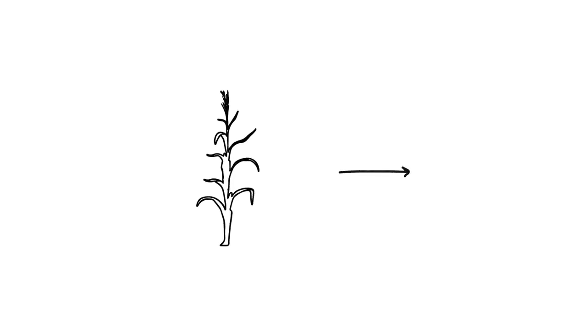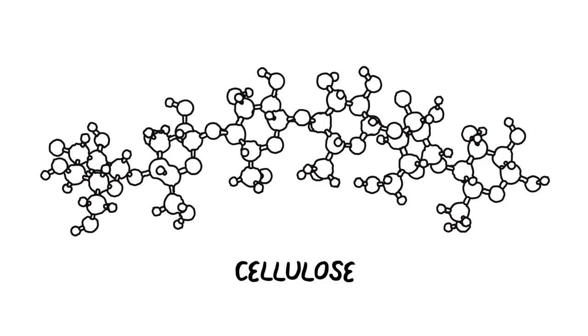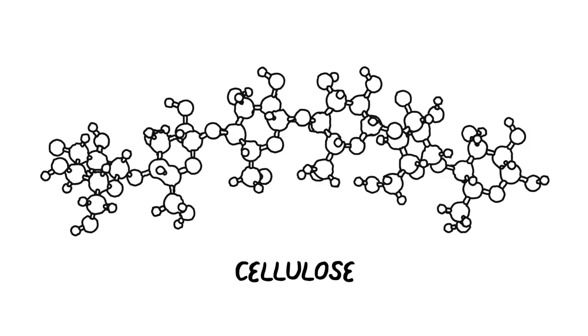Similar to the starch in the grain, the sugars in the stover are also chains of glucose called cellulose. That's right. Both starch and cellulose are sources of sugar.